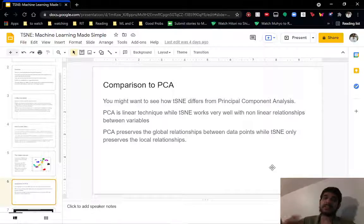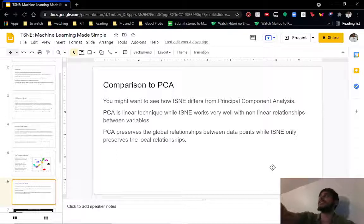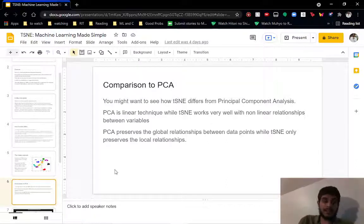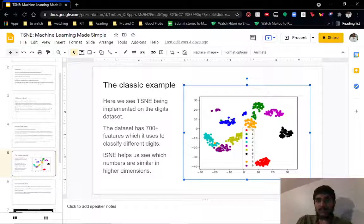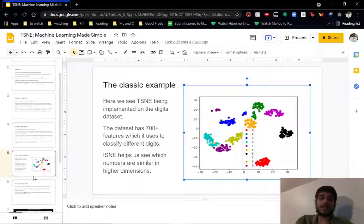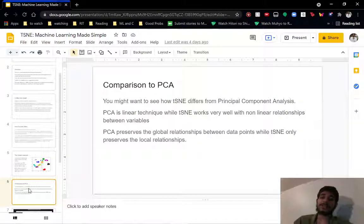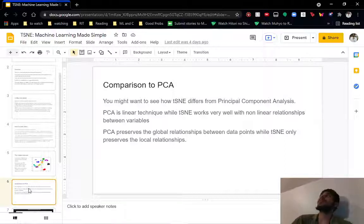Similarly, TSNE does not preserve global relationships. PCA will try to preserve the entirety of the structure of the algorithm. TSNE will try to make sure that similar points are very close to each other, and if a point is not similar to another point, it's further away. But you cannot take a random blue point and say it's this far away from a purple point, so there is that much of a difference between them. You cannot do that with TSNE because it doesn't preserve the global relationships. What it does do is it preserves local relationships. If two points are close to each other, you have a very good idea that they are similar to each other.